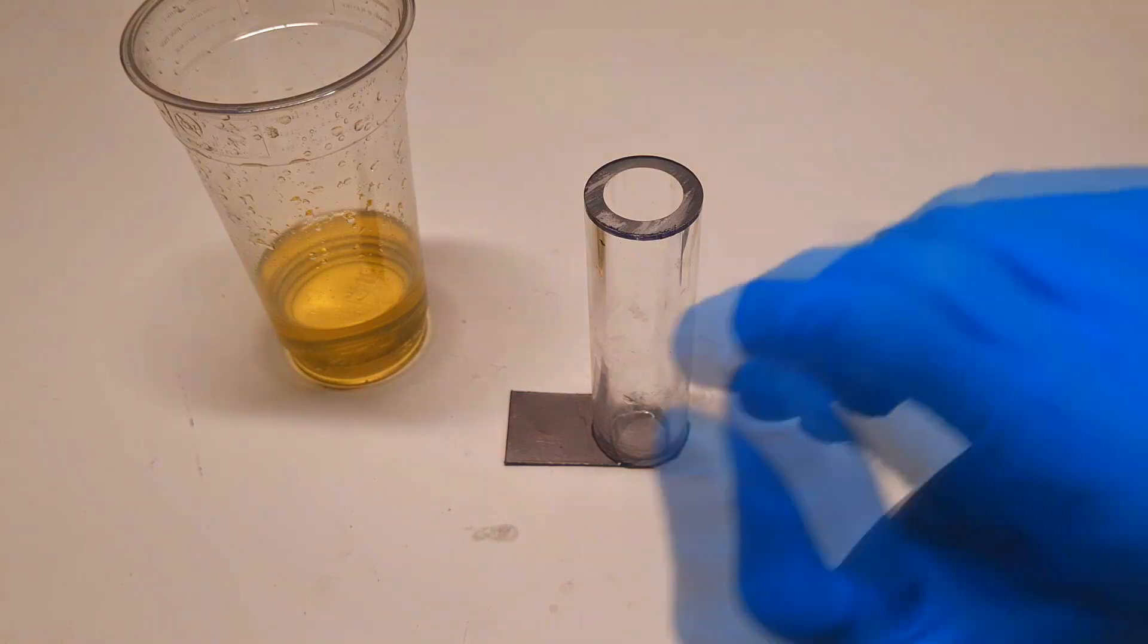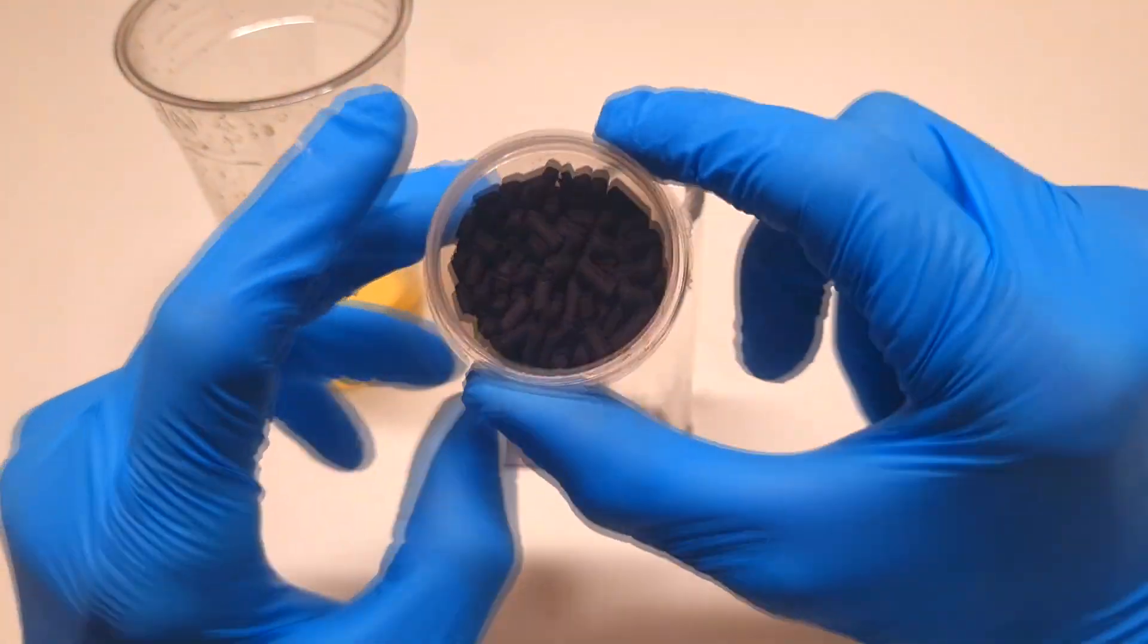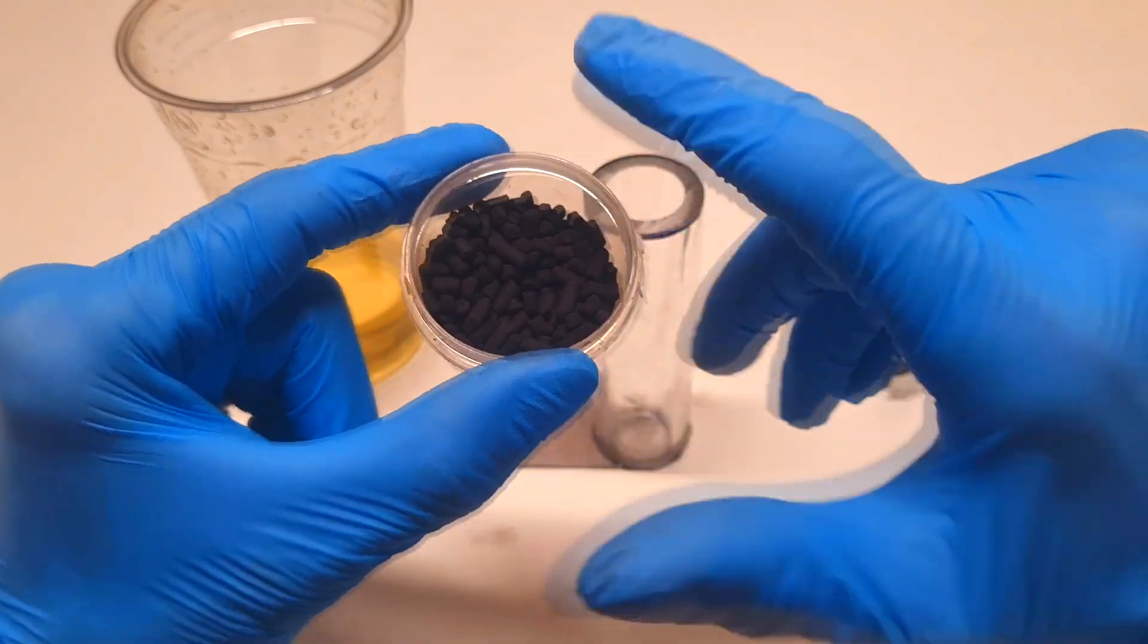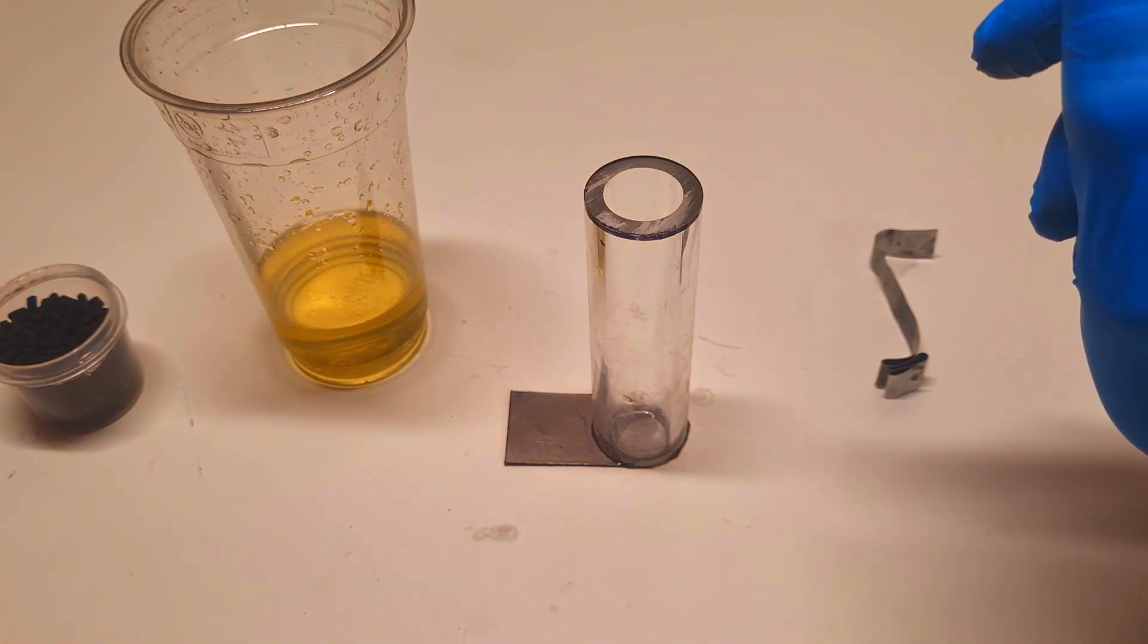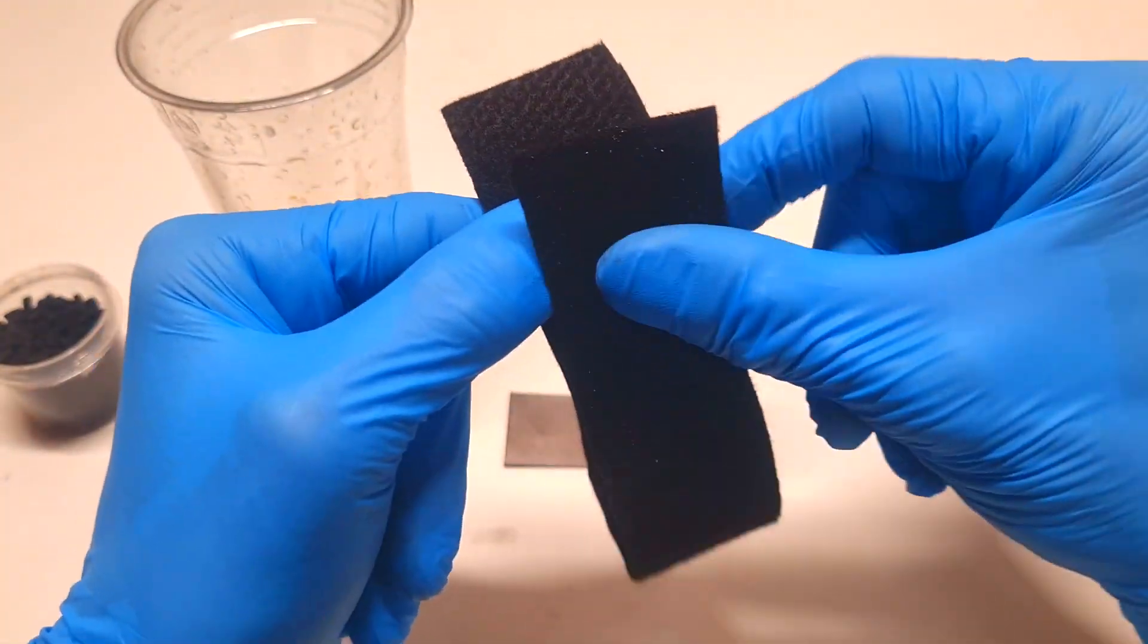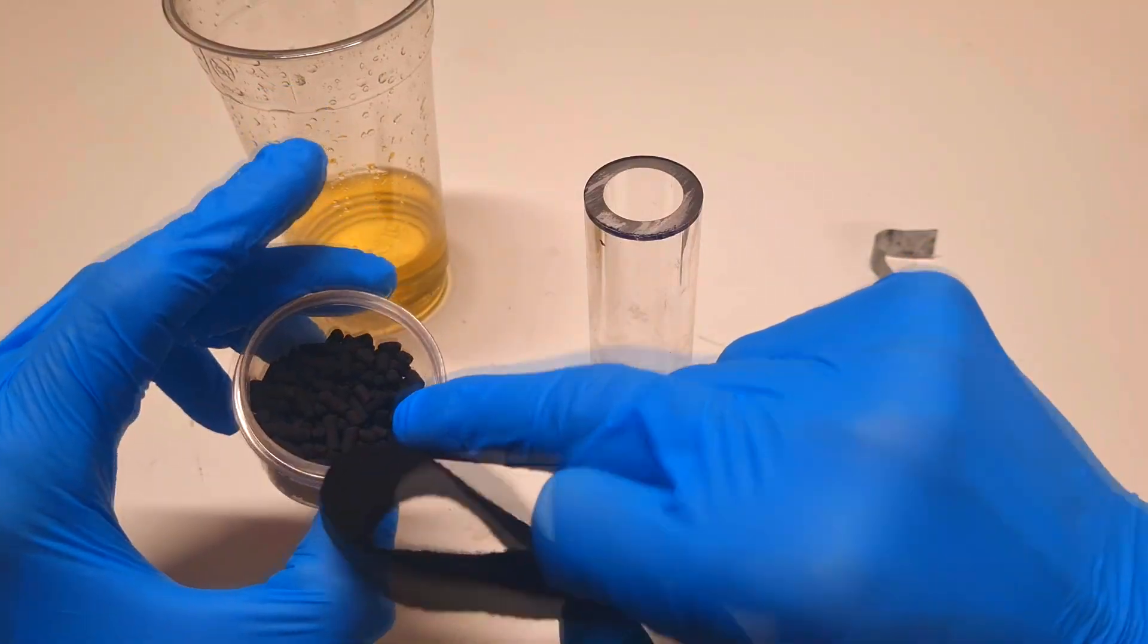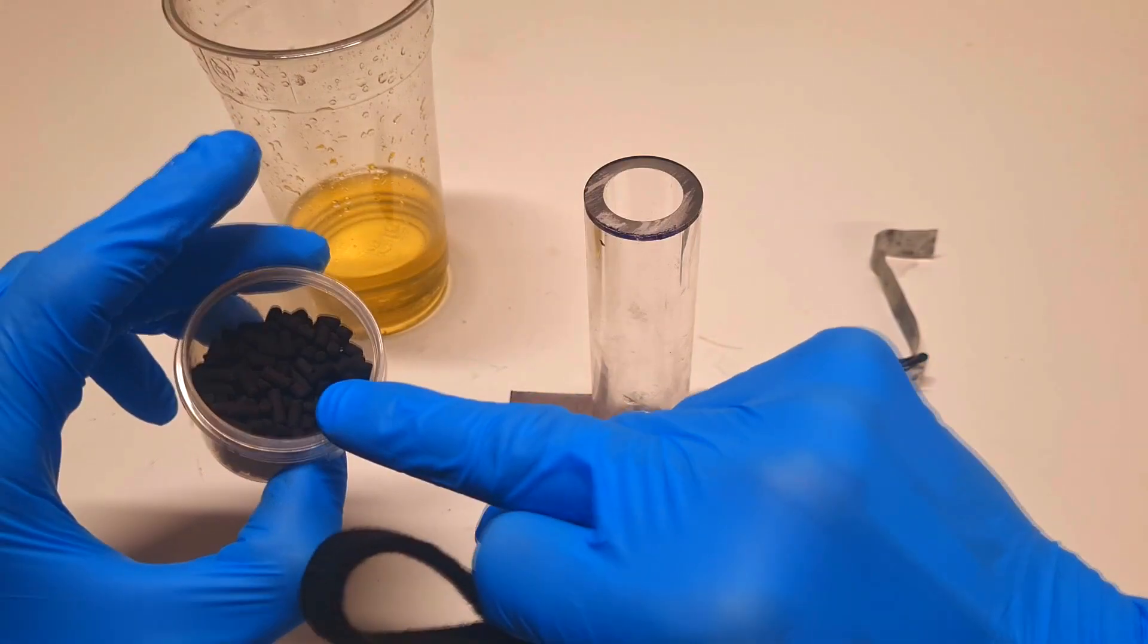So in this case I can use some activated carbon pellets like I did in this zinc-bromine gravity battery. But this time instead of using these pellets, I will use some activated carbon felt. So this activated carbon felt has a little bit more surface area than these pellets, but the pellets are easier to find and also a little bit cheaper.